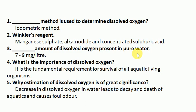Question 4: What is the importance of dissolved oxygen? Dissolved oxygen is fundamental for the survival of all aquatic living organisms. Question 5: Why is the estimation of dissolved oxygen significant? A decrease in dissolved oxygen in water leads to decay and death of aquatic organisms and causes poor water quality, affecting aquatic animal respiration. Normal dissolved oxygen is 8 mg per liter.